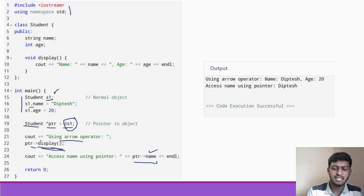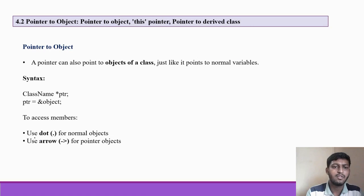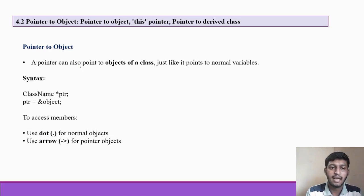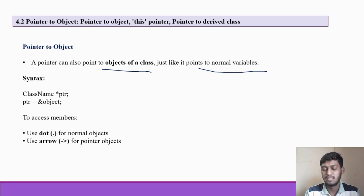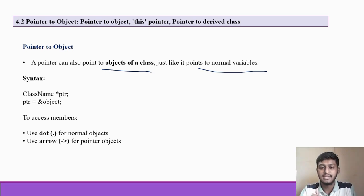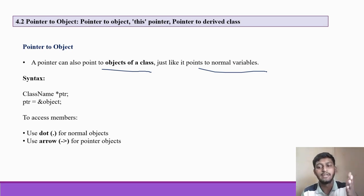A pointer can also point to the object of a class, just like it can point to a normal variable. This is the basic concept of pointer to object. I hope the concept is clear.